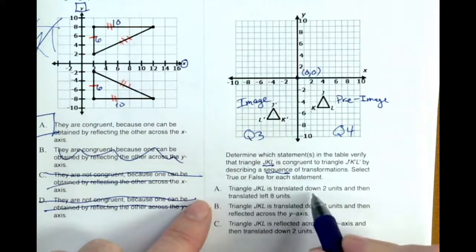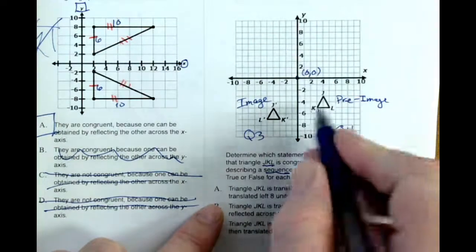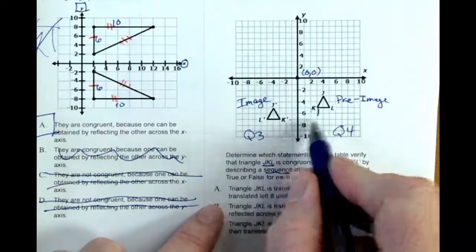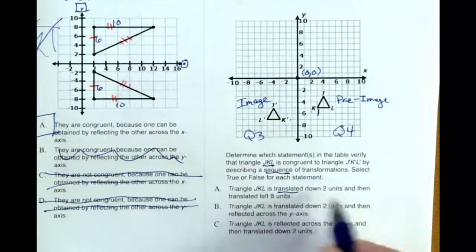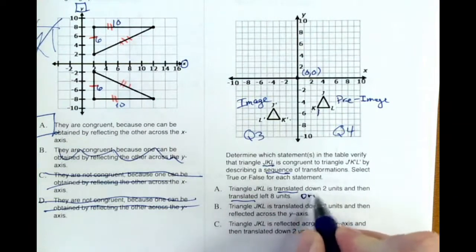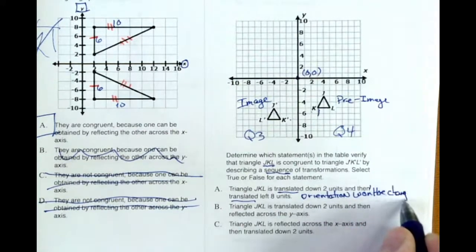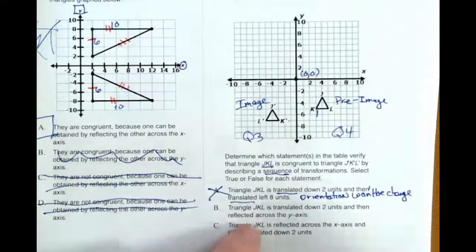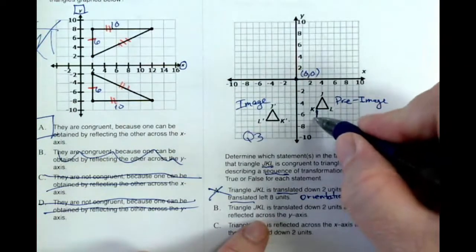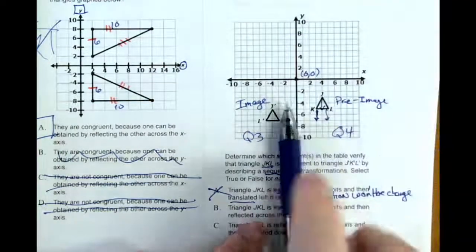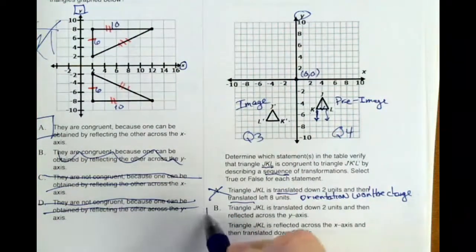Triangle jkl is translated two down and then translated eight left. Well, the problem here is just taking it down and left for each point. It's not going to reverse the k and the l. It's not going to flip them over. So that's just two translations. That's not going to change. The orientation won't be changed. So that's not going to happen. jkl here is translated two units and then reflected across the y-axis. Well, that might work if I take this down two and two and two. If I take them all down two and then I reflect that object over the y-axis. This is y. That'll work. So that's going to be a true statement.